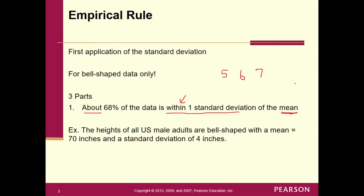Here's an example: the heights of all U.S. male adults are bell-shaped, with the mean equaling 70 inches and a standard deviation of 4 inches — that's 5 foot 10. That's a reasonable number.